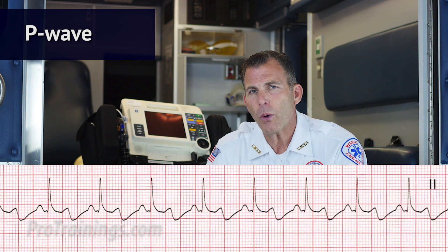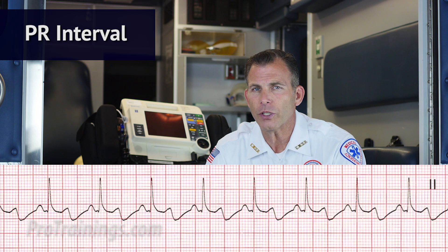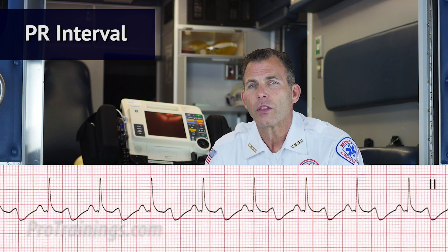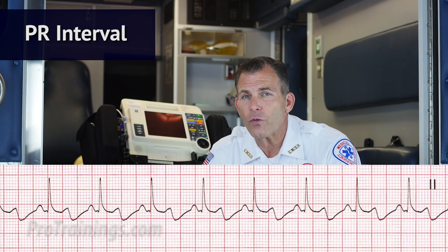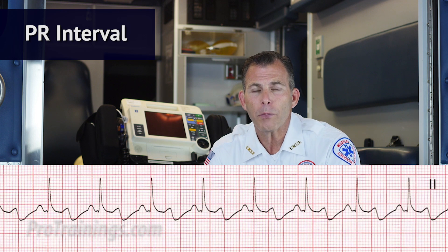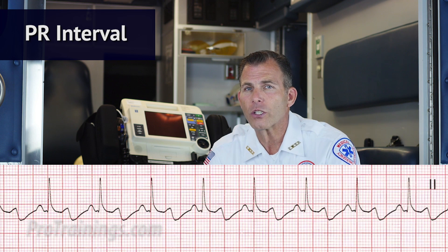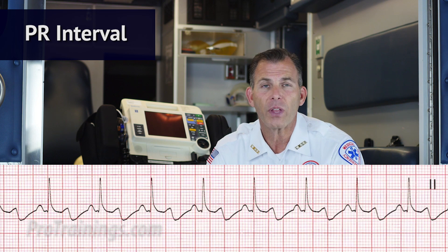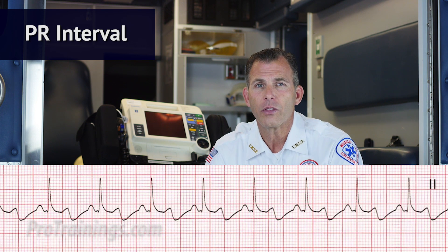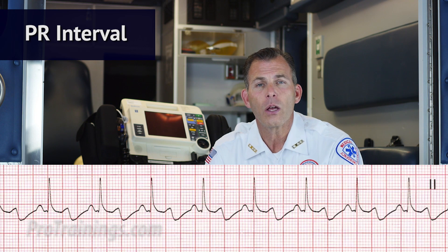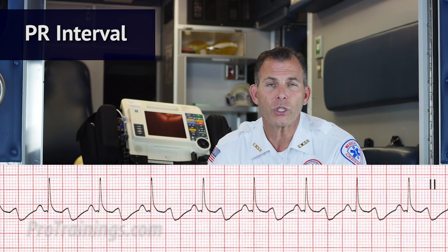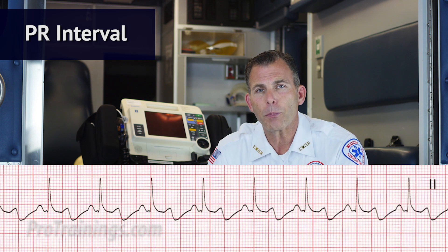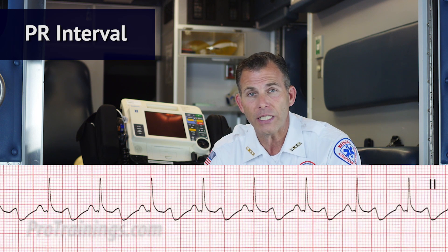So now we want to know what the PR interval is for this ECG. The PR interval falling between the norm of 0.12 to 0.20 seconds is okay. And in this case, yes — the PR interval is contained within one large box, which equals 0.2 seconds. Is the PR interval constant? Yes.